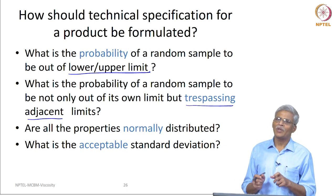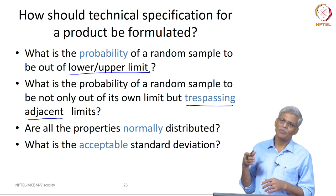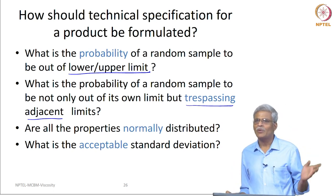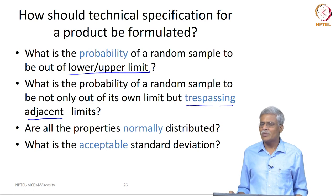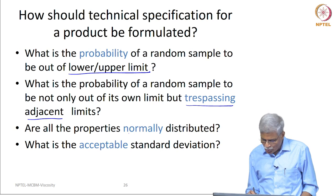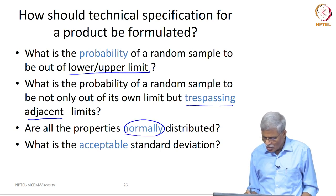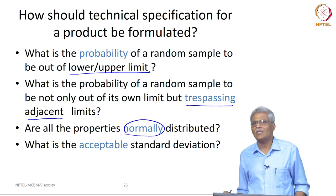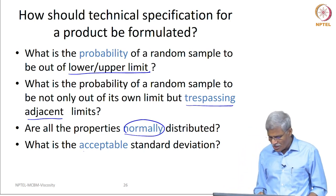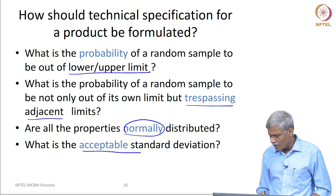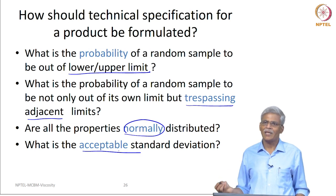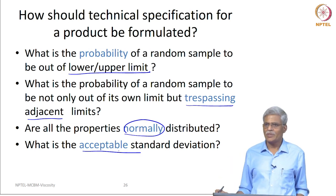So one should write specifications in such a way that even if one parameter trespasses into another grade's limit, it will automatically not trespass for some other specification parameter. That is why we normally keep the penetration values as a minimum and give a range for viscosity, because since it is a minimum value, the possibility of trespassing into different limits is reduced. We also need to understand whether the distribution is normal — that is the basic assumption — and how much acceptable standard deviation is. These are questions one should raise and discuss before writing any specification.